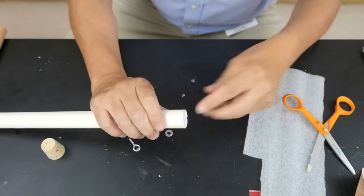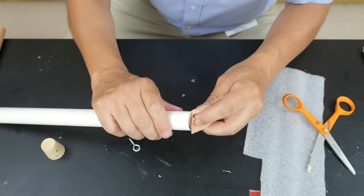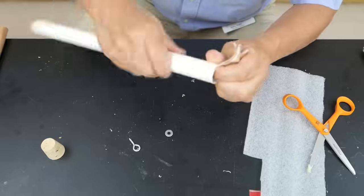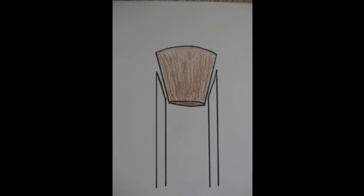After scraping some off and getting the dust out, I take some sandpaper and sand it down a little bit to make it smoother. This should allow that cork to fit better than if it were a sharp edge.